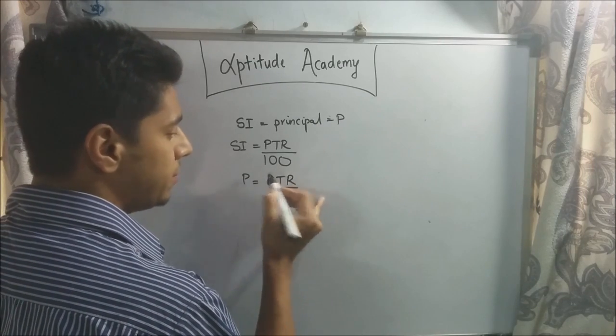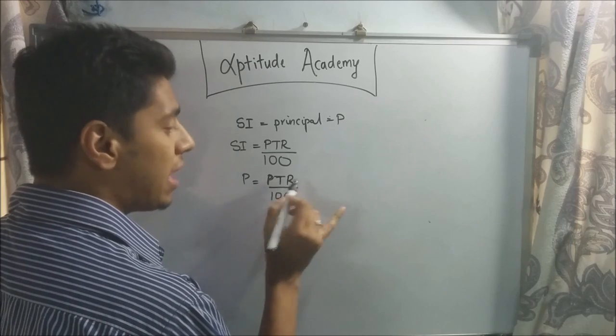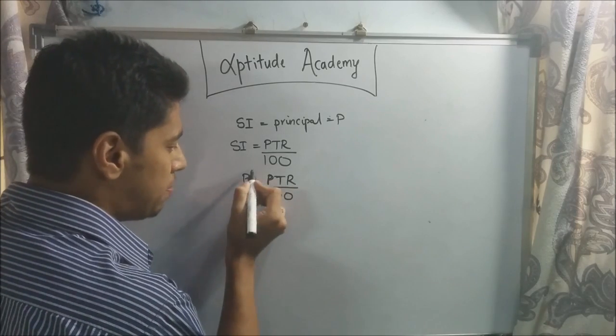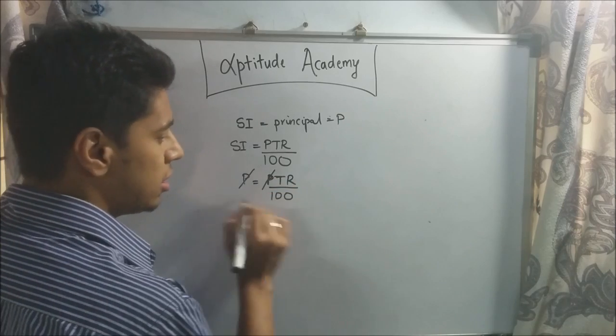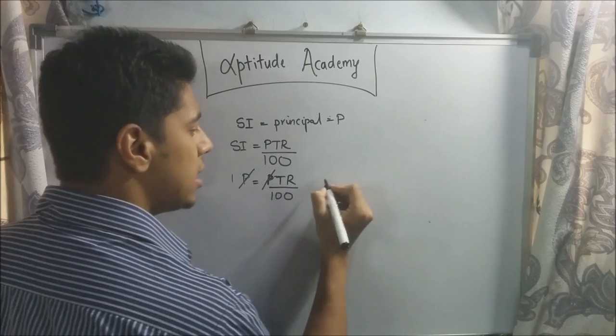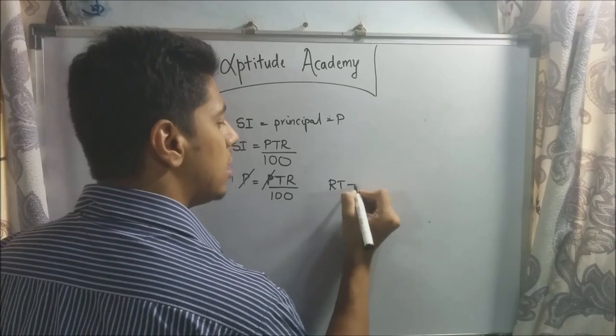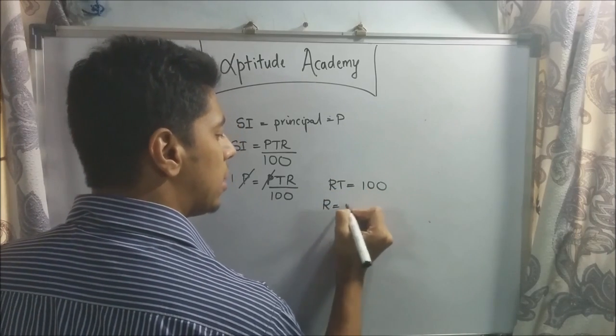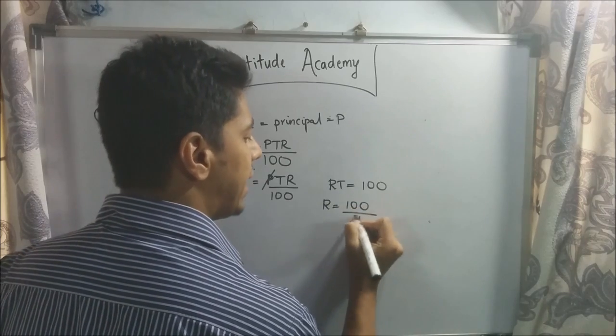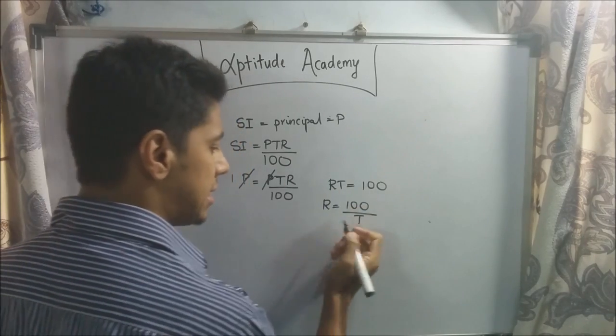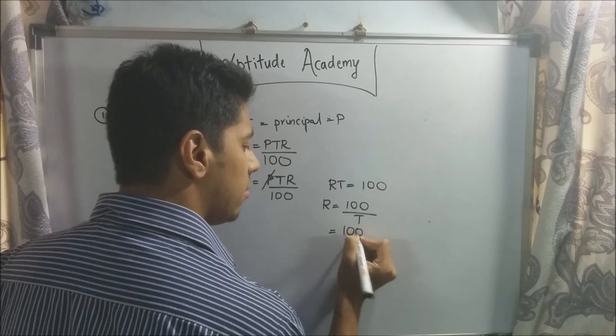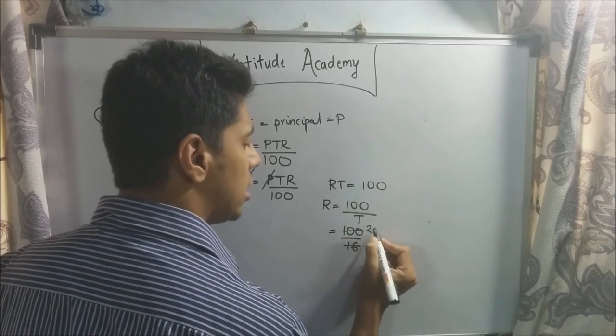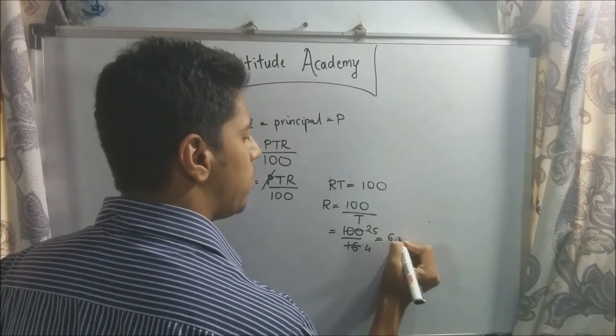Now, we actually don't know P, but it doesn't matter because P and P will get cancelled here. So now you have, this is 1, so RT equals 100. So your rate will be equal to 100 by T. Now, T is given as 16 years. So if you just do 100 by 16, 25 by 4 will be 6.25%.